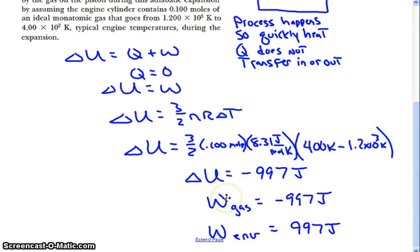So the work done on the gas is negative 997 joules, which means the work done on the environment is positive 997 joules. That's one way you can approach an adiabatic process problem.